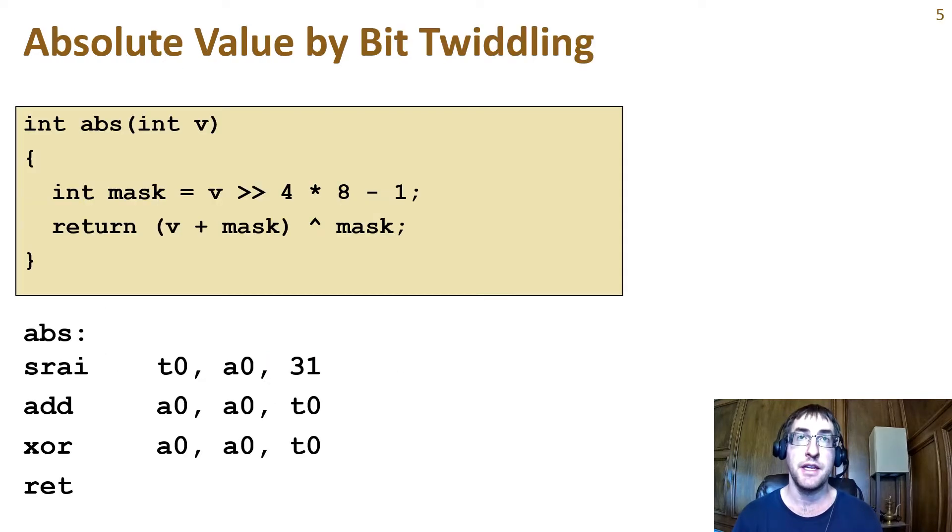Remember this example that calculates an absolute value without using a conditional statement? Let's quickly walk through it again before we look at a version using conditionals. The first line of C code becomes one instruction to shift the sign bit through the entire temporary register T0. Then the input parameter is added to the mask before XORing with the mask, putting the result into A0 to return it. The function returns with the return value in A0.